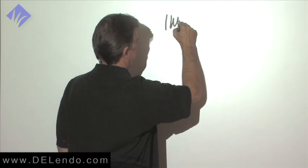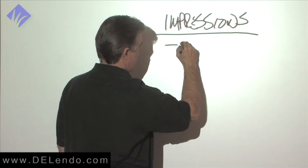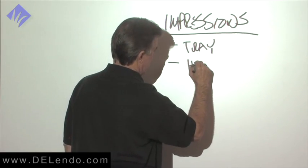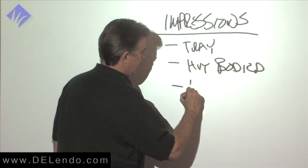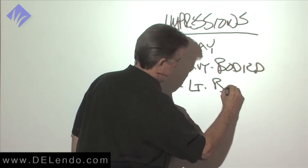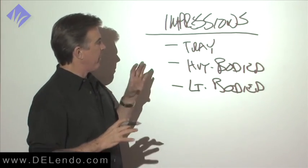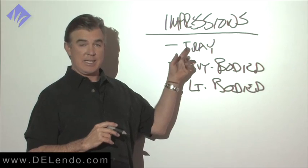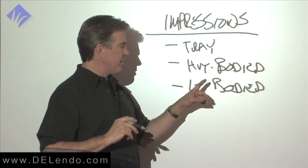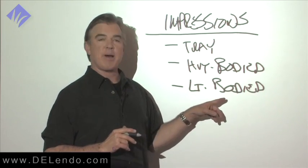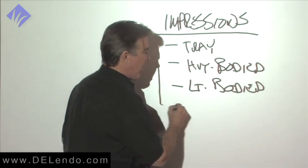So impression tray, three-part impressions. We have the tray, we have the heavy-bodied material and we have the light-bodied material. The tray pushes the heavy-bodied material against the teeth. The tray is not supposed to fit the teeth. It's supposed to be larger than the area we want to take an impression of. That pushes the heavy-bodied material. The heavy-bodied material pushes the light-bodied material but also is lubricated by the light-bodied material so that it slips and slides and moves more effectively.